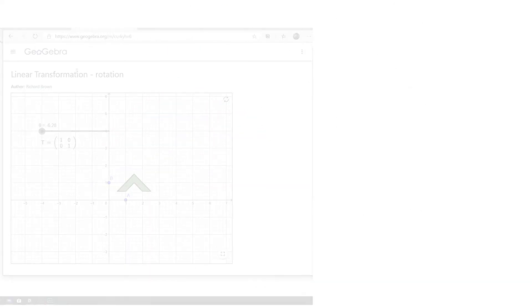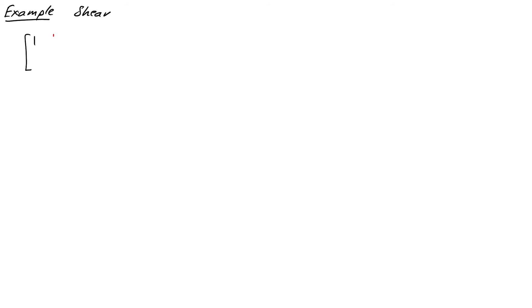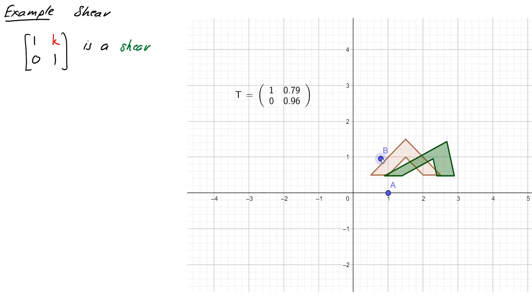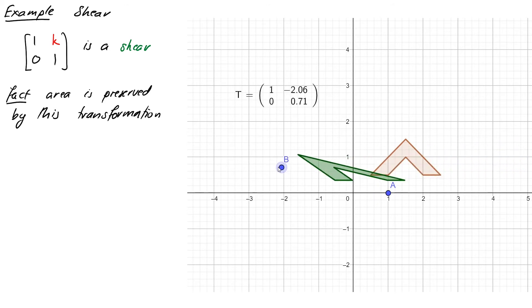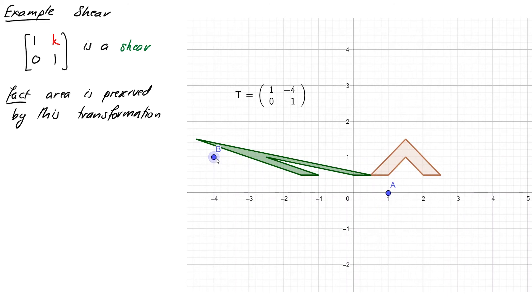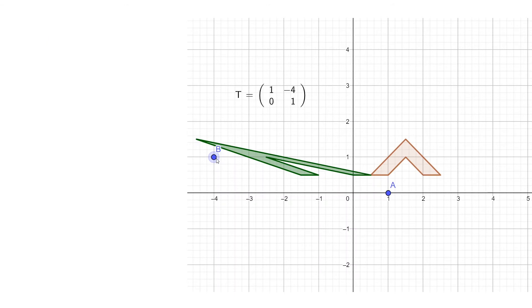Our next example is shear, which can be expressed by a matrix of the form (1,k;0,1) — this is a horizontal shear. With k=2 you can see it pushes the whole thing sideways in a stretchy kind of way. The first vector stays where it is and the second moves to (2,1). An interesting fact is that the area of the figure stays the same after the shear, no matter how much you shear it by.